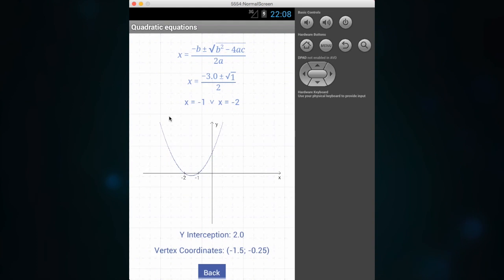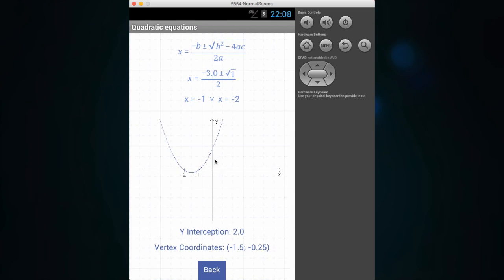We have here the roots and we also have the information of the interception with the y-axis and the vertex coordinates. In this case, minus 1.5 and minus 0.25, so we have here the vertex.